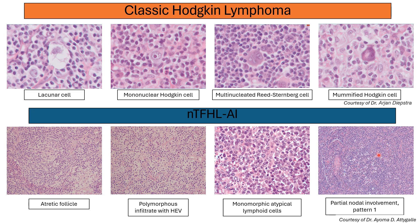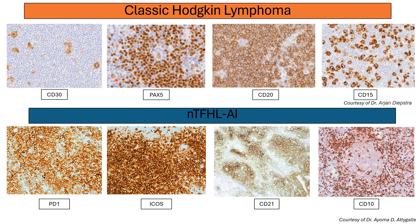This shows partial involvement of AITL with a follicular hyperplasia-like pattern. Immunophenotypically, classic Hodgkin lymphoma shows CD30 positivity and PAX5 dim in large cells, while background small lymphocytes are PAX5 positive. CD20 is usually negative in the large Hodgkin cells, and CD15 is positive with a perinuclear dot pattern. In contrast, AITL will express TFH markers such as PD1, ICOS, and CD10, and will highlight the follicular dendritic cell meshwork by CD21.